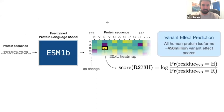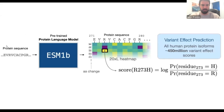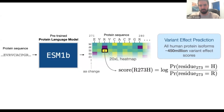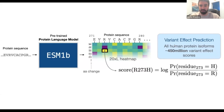We used ESM1B in a straightforward way: for each query protein sequence, we just feed it into ESM1B exactly as is — using the pre-trained model without any fine-tuning. Using the probability matrix we get from ESM1B, for each mutation we calculate a score, which is a log-likelihood ratio between the probability of the mutated amino acid to the wild-type amino acid. We calculate these scores for every possible missense mutation in the human genome, ending up with about 450 million variant effect scores.